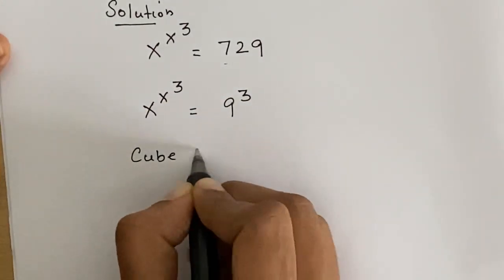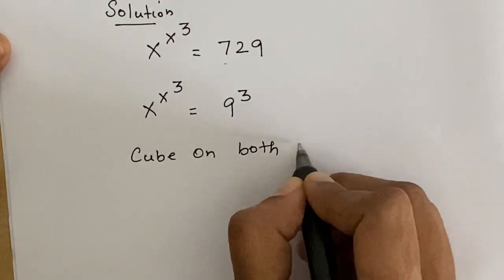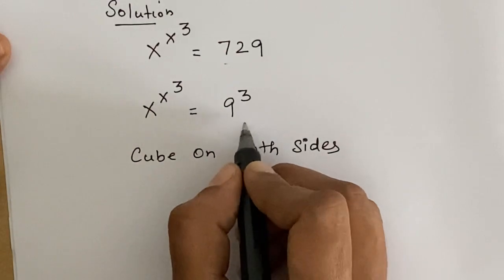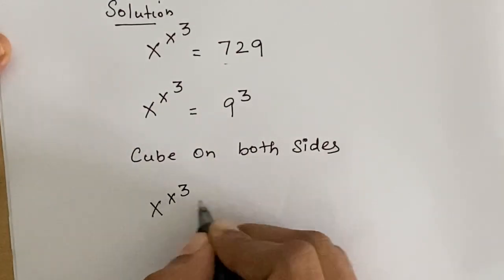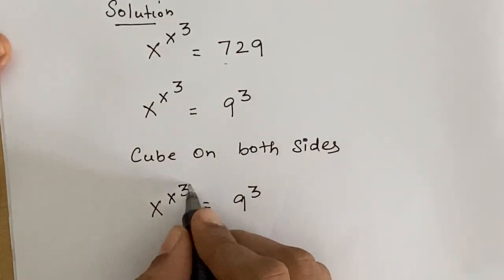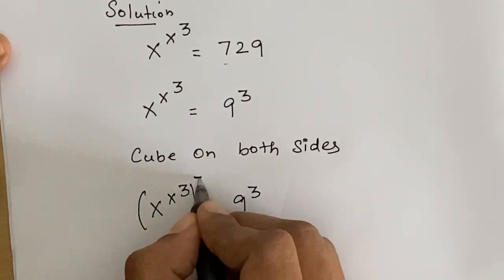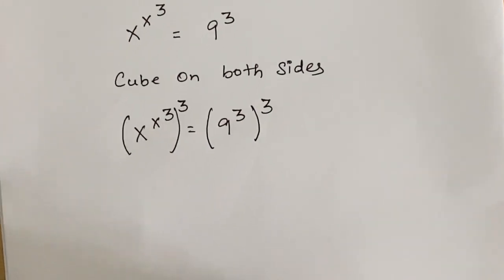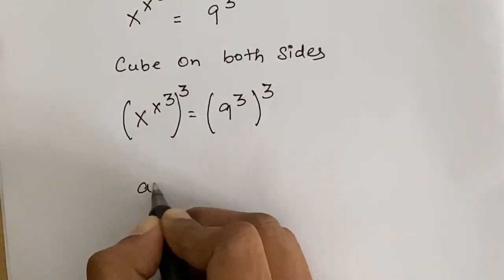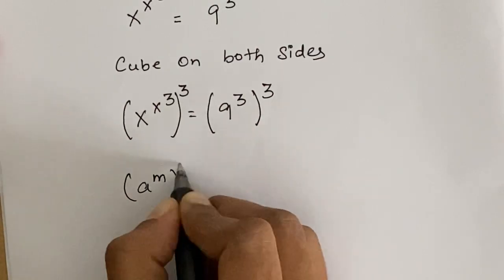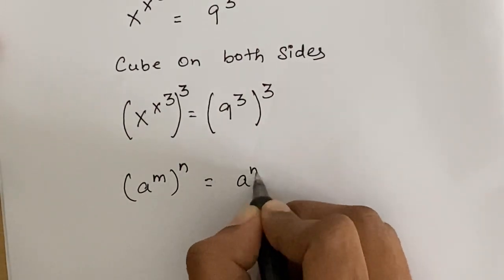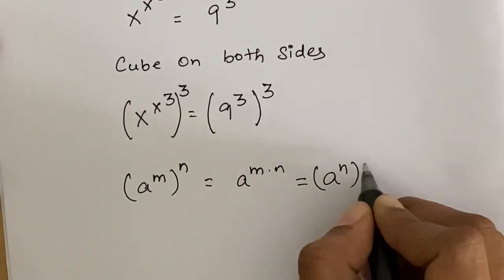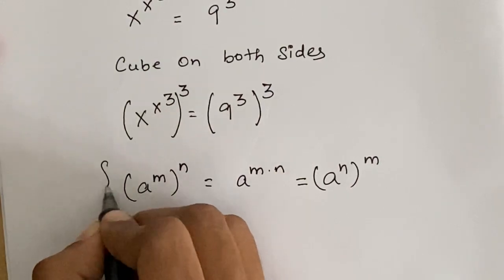Now we take a cube on both sides. We have x to the power x cubed equals 9 cubed. We know the formula that a to the power m to the power n equals a to the power m times n, which is also written as a to the power n to the power m.